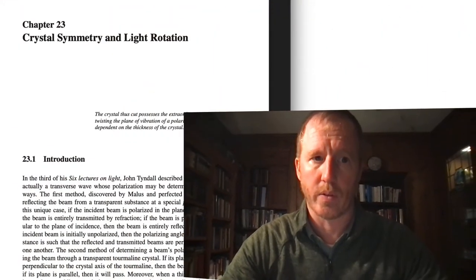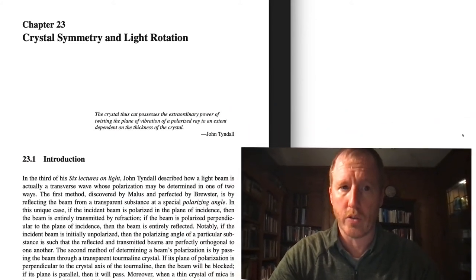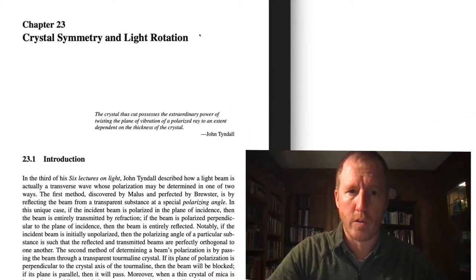Hello, everyone. This is Professor Keen, and welcome back to my lectures on Electricity, Magnetism, and Light, where we have been looking at the work of John Tyndall. We've been looking at his lectures on light, and we're in Chapter 23 in his Student's Guide to the Great Physics Text, Volume 3. This is the chapter on Crystal Symmetry and Light Rotation.